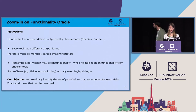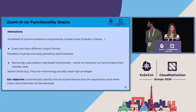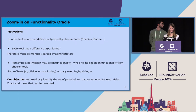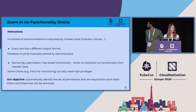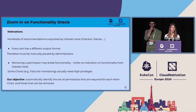Francesco just introduced different policies handled by checker tools like Checkov and Datree. Each of these tools outputs hundreds of recommendations to fix the Helm chart and make the configuration more secure. We noticed that every tool has different output formats, so this output must be manually parsed by administrators. Sometimes the output can be quite long to parse, with several thousands of lines.